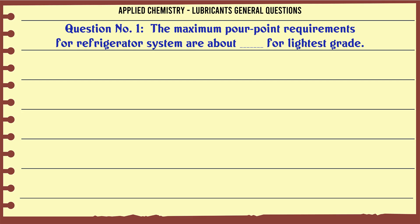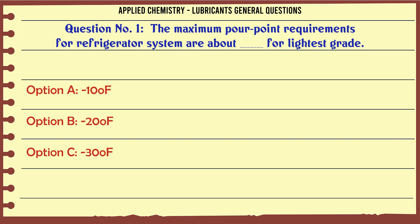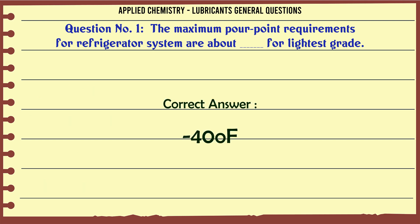The maximum pour point requirements for refrigerator systems are, for the lightest grade: A. -10°C, B. -20°C, C. -30°C, D. -40°C. The correct answer is -40°C.